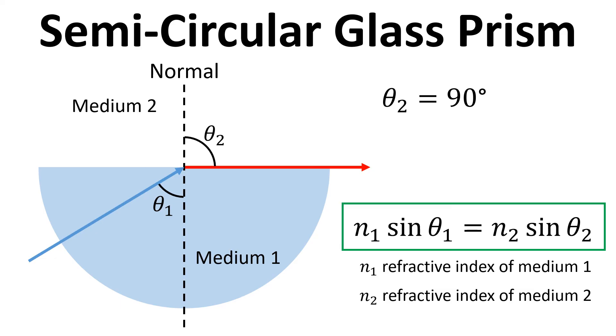Until we get to the point where the angle of refraction is 90 degrees. This is quite a special point. As we've increased the angle of incidence further and further, once we get to an angle of refraction of 90 degrees, there's some important things that we need to pause and talk about at this stage.